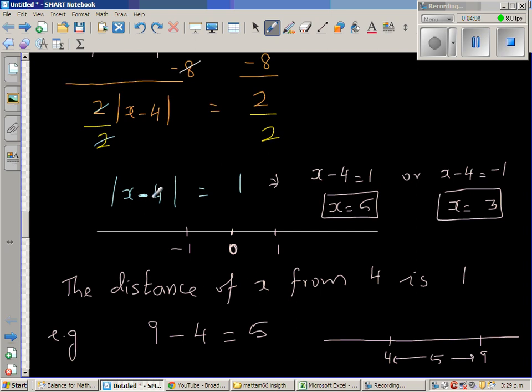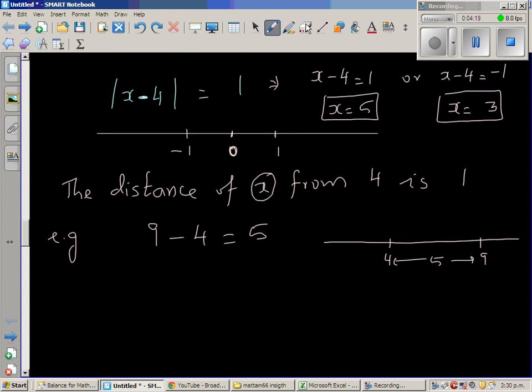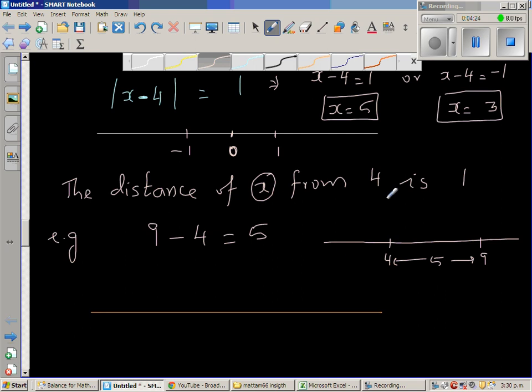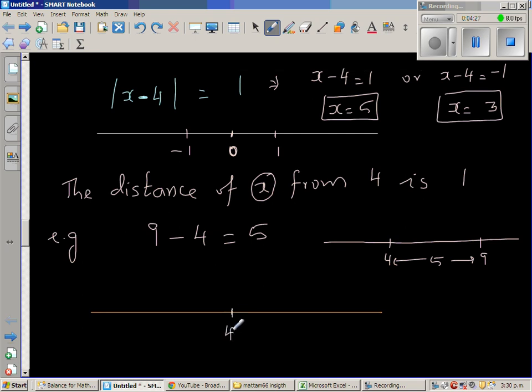Same way, x minus 4 means the distance of x from 4 is 1. So whatever that x is, the distance of that x from 4 is 1. So let me draw a number line. So it is from 4. So this is your 4. So the distance of x from 4 is 1. So from 4 you have to go 1 to the right. If you go 1 to the right you will reach 5. Or you go 1 to the left. That is 3. So these are the two answers. x is 3 or x is 5.